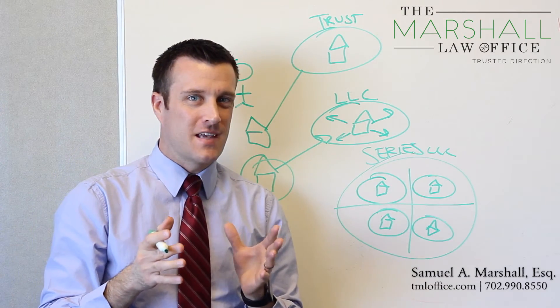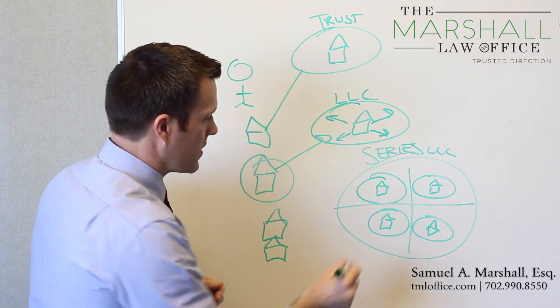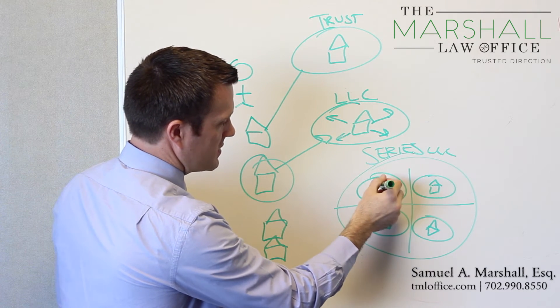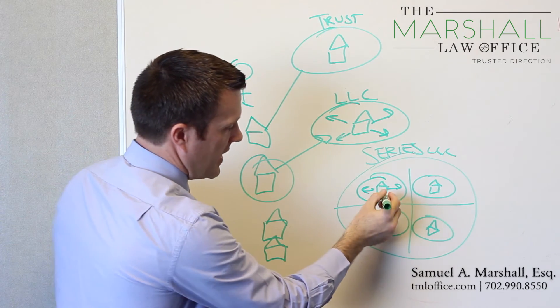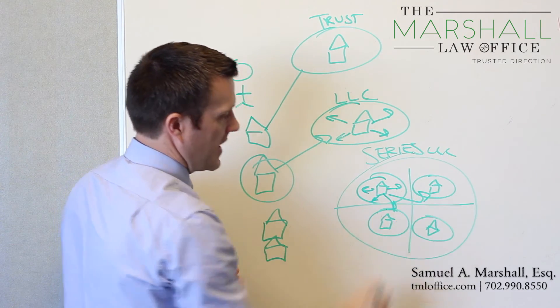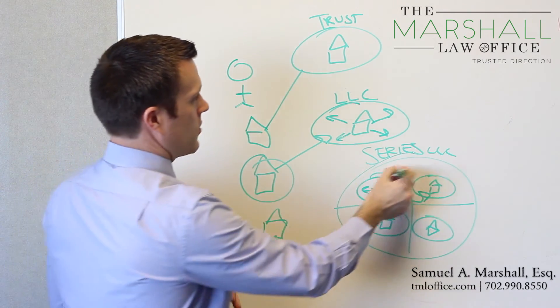And not all states have this. Nevada does. And what the statute says is that all the liabilities for this series are within this barrier of protection. You can't go to this one, and creditors can't go to that one, and they also can't go to the trust.